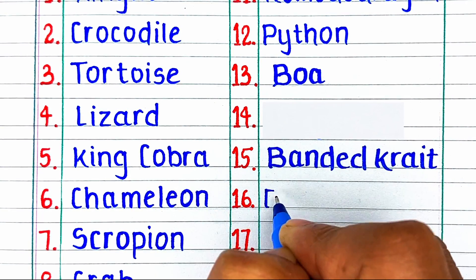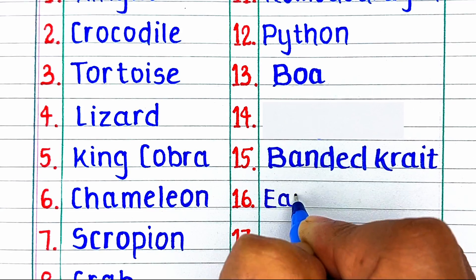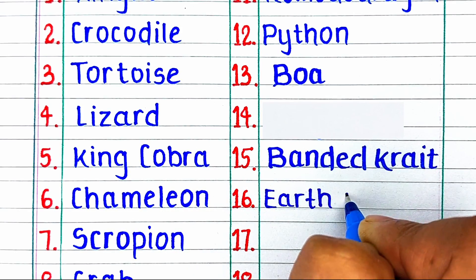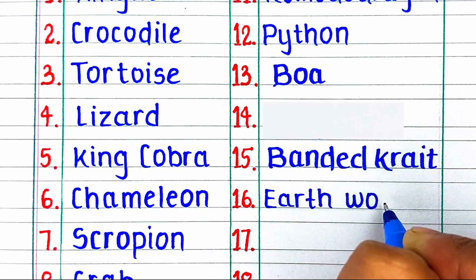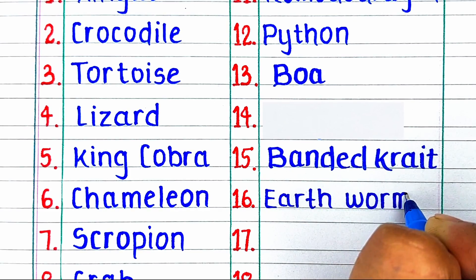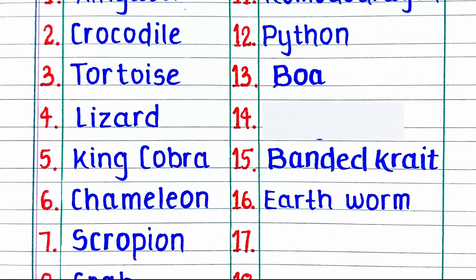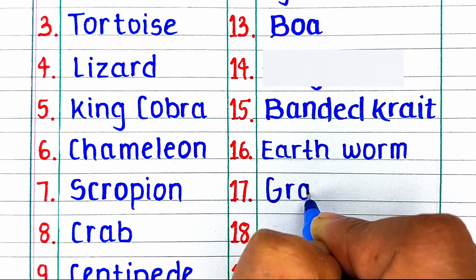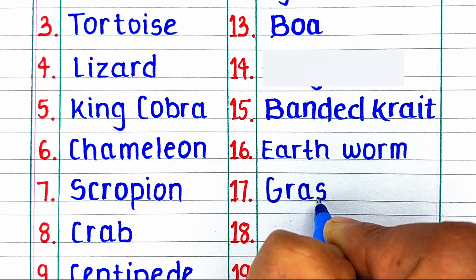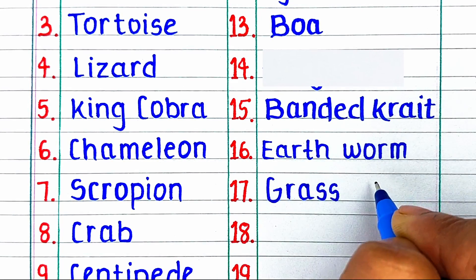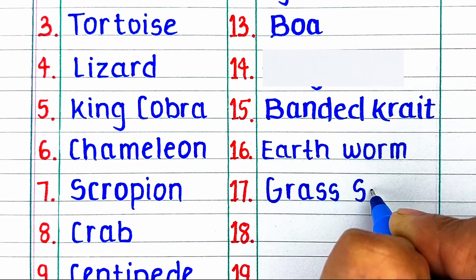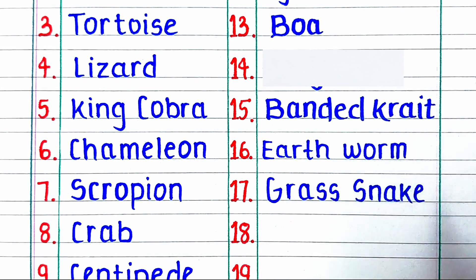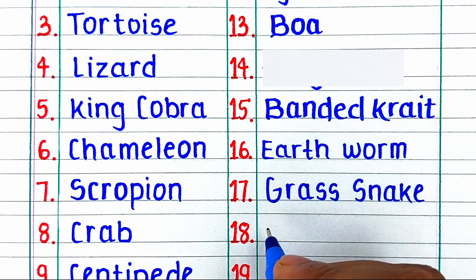Next is E-A-R-T-H-W-O-R-M, earthworm. Next is G-R-A-S-S S-N-A-K-E, grass snake.